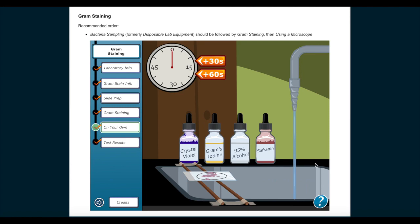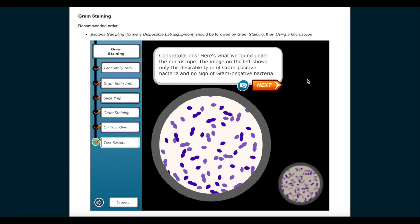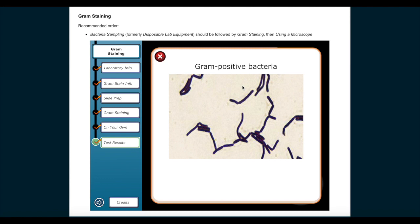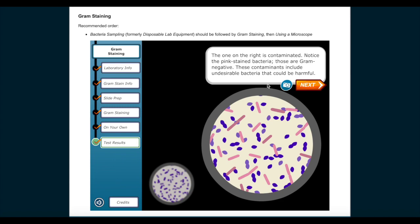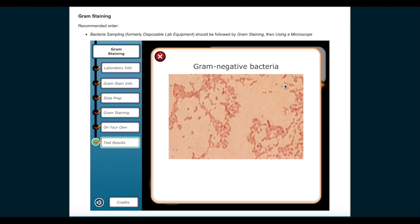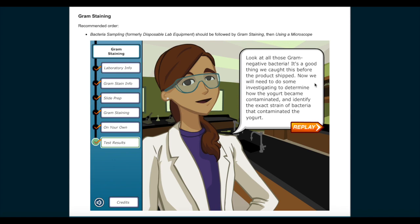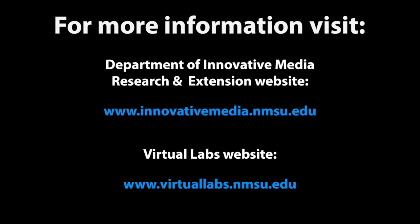Good job. You completed gram staining a slide on your own. Congratulations! Here's what we found under the microscope. The image on the left shows only the desirable type of gram-positive bacteria and no sign of gram-negative bacteria. The one on the right is contaminated. Notice the pink stained bacteria. Those are gram-negative. These contaminants include undesirable bacteria that could be harmful. Look at all those gram-negative bacteria. It's a good thing we caught this before the product shipped. Now we will need to do some investigating to determine how the yogurt became contaminated and identify the exact strain of bacteria that contaminated the yogurt.